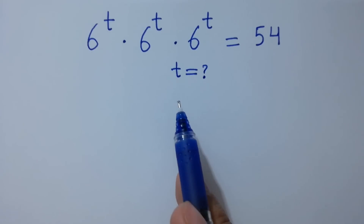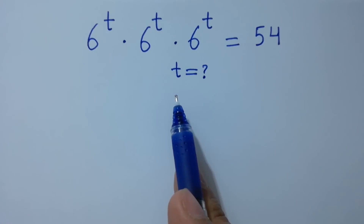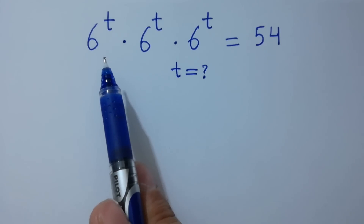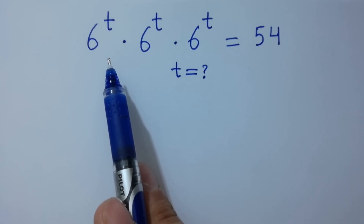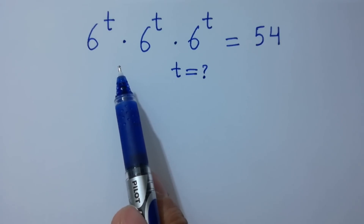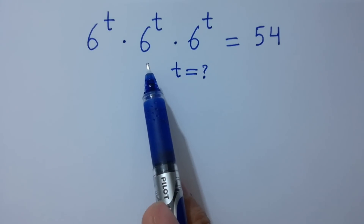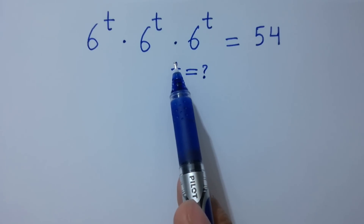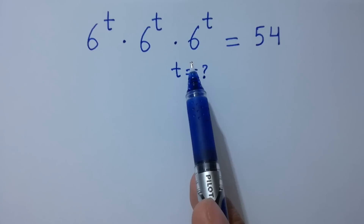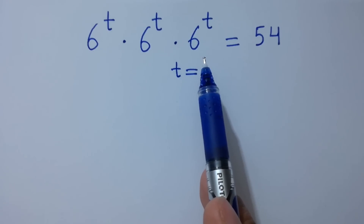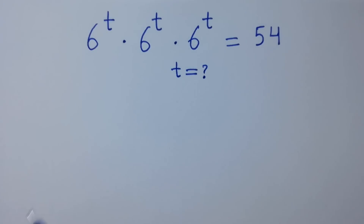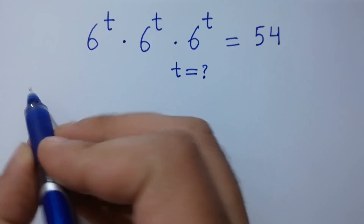Hello friends. Find the value of t if 6 to the power t times 6 to the power t times 6 to the power t equals 54. Let's have a solution.